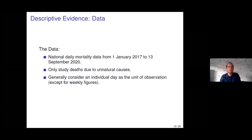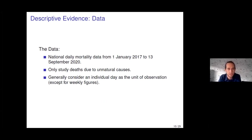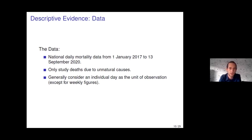The data we're analyzing is daily mortality data from the 1st of January 2017 to the 13th of September 2020. We are only studying deaths due to unnatural causes — this excludes deaths due to COVID-19 and other natural causes. In most of the analysis, the unit of observation is an individual day, though a couple of figures use weekly data.